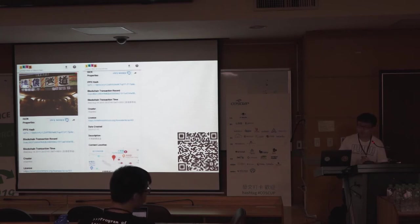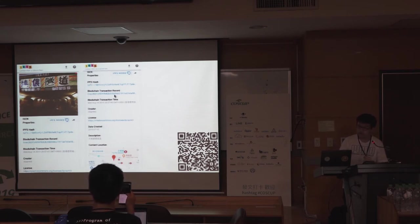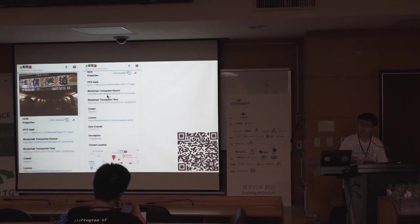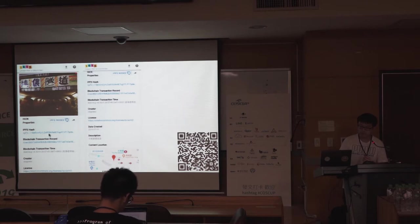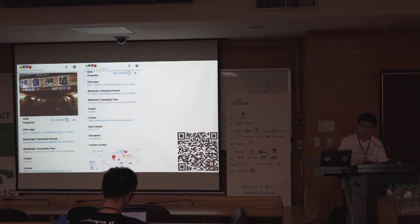You can see that someone has uploaded this image. For the metadata — who is the creator of this photo — this content is on the blockchain. Therefore, there is a blockchain transaction record, and you can refer to it for the upload time. The photo itself is on IPFS, so you can see the IPFS address. The metadata is also recorded in IPFS — you can refer to the license, the date created, description. We have also recorded the content location, if the uploader has provided that. By the way, it's open source, so we welcome everyone to contribute.